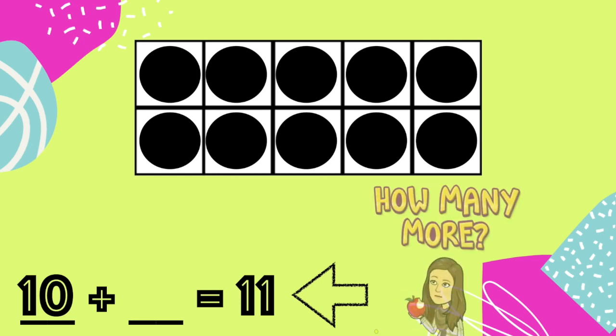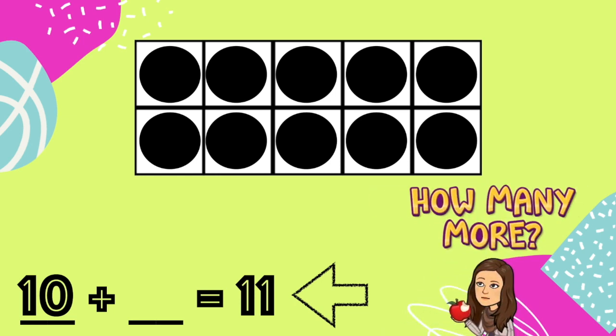Now, I need to ask myself, how many more counters do I need to get to 11? I can figure this out by starting at 10 and counting on. What comes after 10? That's right, 11! All I needed was one more counter to get to 11. 10 plus 1 equals 11. I made the number 11 by taking a group of 10 and adding one more.